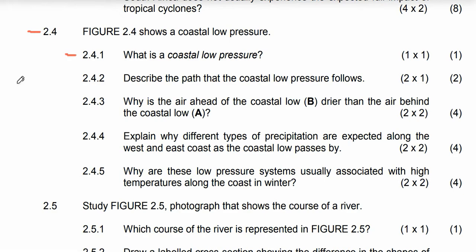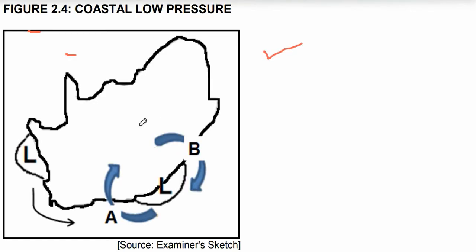A coastal low pressure is a weak low pressure system that develops along the west coast. I repeat again: a coastal low pressure is a weak low pressure system that develops along the west coast. As you know, the coastal low pressure system develops on the west side.